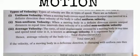Second topic is non-uniform velocity: when a moving body in a definite direction covers unequal distances in equal time intervals, then velocity of it is called non-uniform velocity.